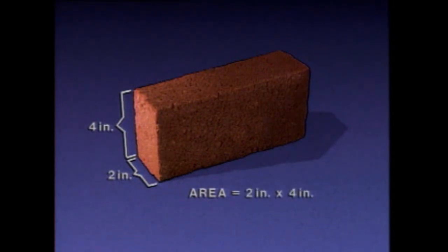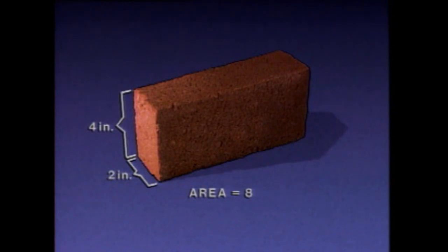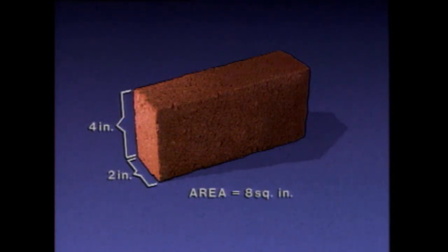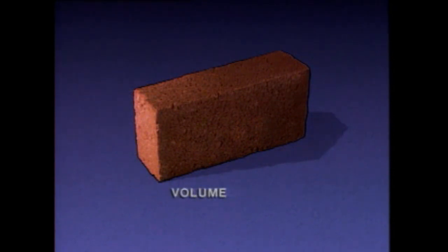Two times four is eight. Since area is a two-dimensional surface, it is expressed in square units. For this example, since both sides were measured in inches, the area measurement is expressed in square inches. Other units of area, such as square feet, square yards, and square miles, would be calculated the same way.